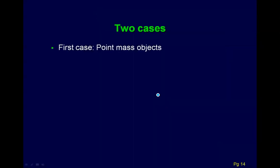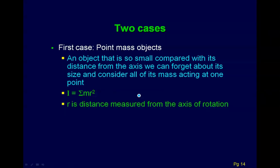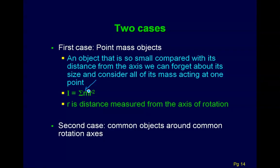Now let's define how to actually calculate moment of inertia. The first case is what we call a point mass — an object so small compared with its distance from the axis that we can consider all of its mass acting at one point. The equation is I equals sum of MR squared, where R is the distance measured from the axis of rotation. The sigma is there in case you have more than one object.